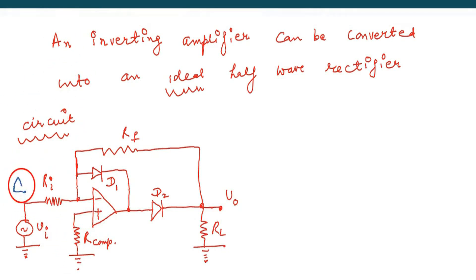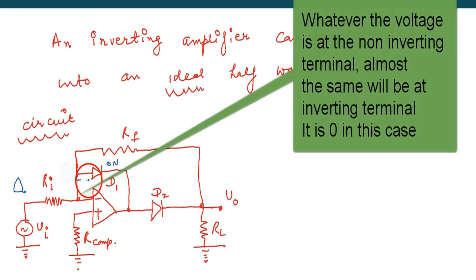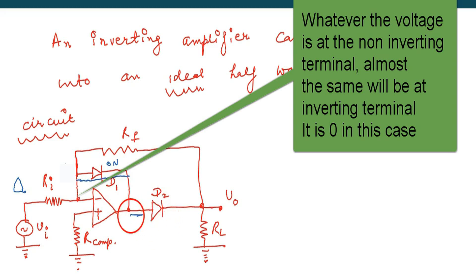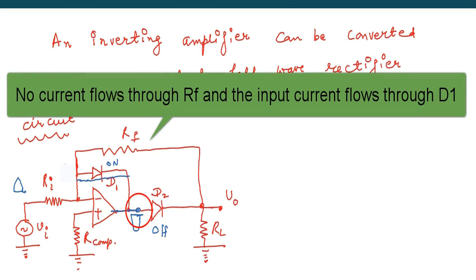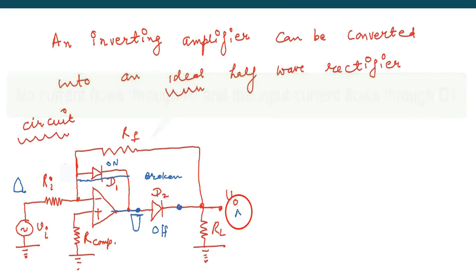When the positive half of the signal comes, this is an inverting op-amp. That's why the negative half appears at the output, and diode D1 becomes ON. Negative half appears here because of the inverting amplifier. D1 becomes ON and D2 is OFF. D2 is off because negative is appearing at the P-side of D2. So this is an open circuit — there will be no output.